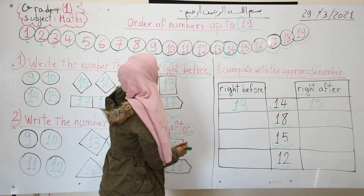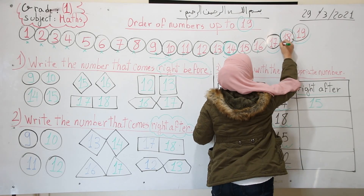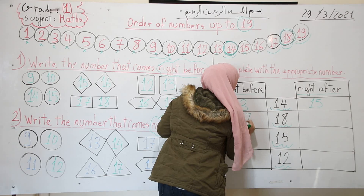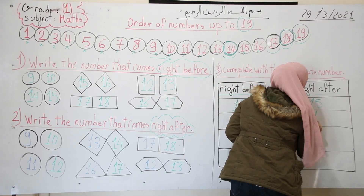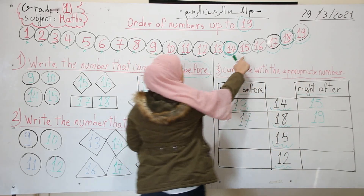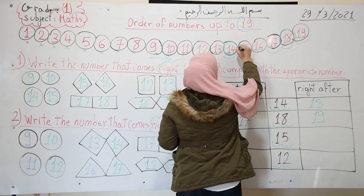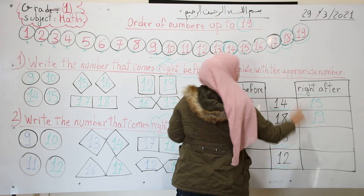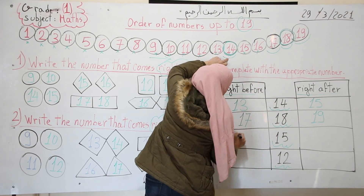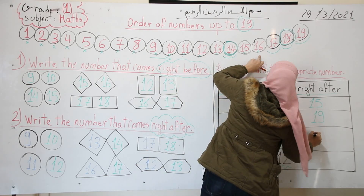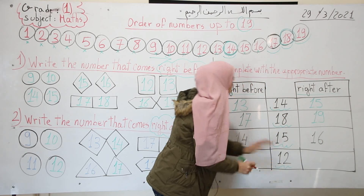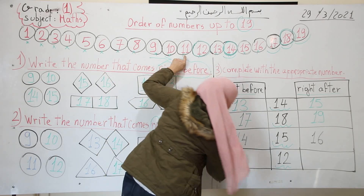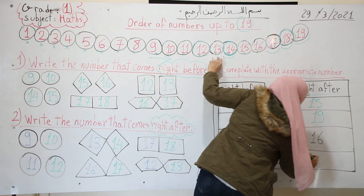For number 18: 17 is right before 18, and 19 is right after 18. For number 15: 14 is right before 15 and 16 is right after 15 — so I write 14 before and 16 after. For number 12: 11 is right before 12, and 13 is right after 12.